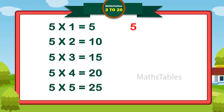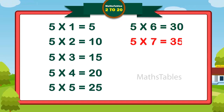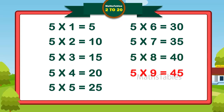Five sixes are thirty. Five sevens are thirty-five. Five eights are forty. Five nines are forty-five. Five nines are forty-five. Five tens are fifty. Five tens are fifty.